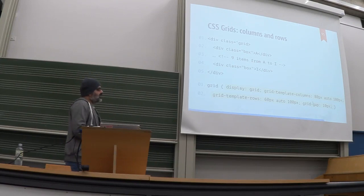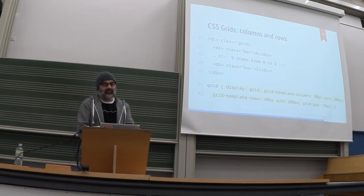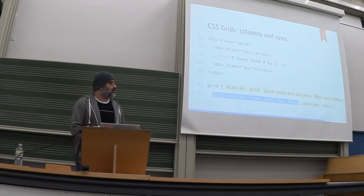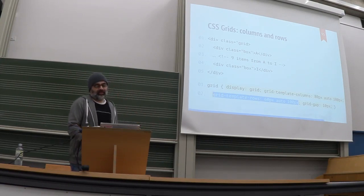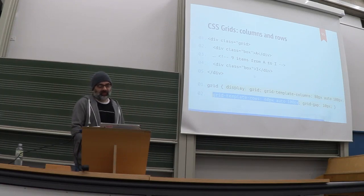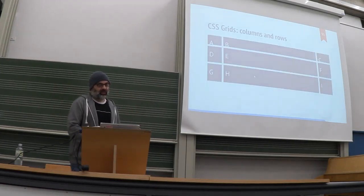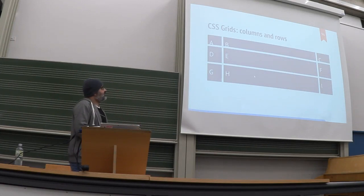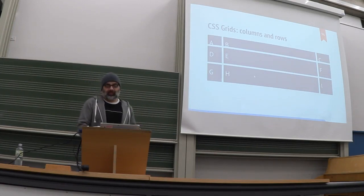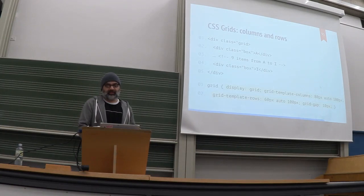Next to columns, you can also define your rows using grid-template-rows. It works in the same way — just say where you want to set your lines. The value auto lets the browser decide what to do. This defines both columns and rows for your grid.